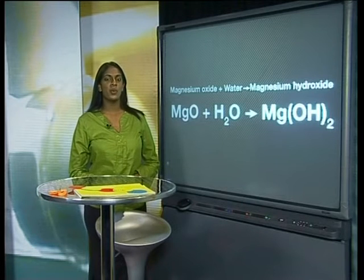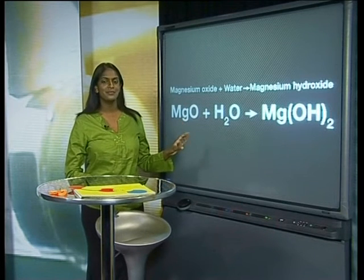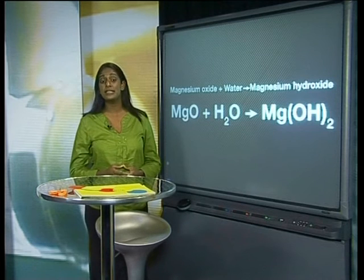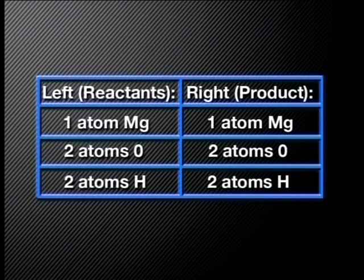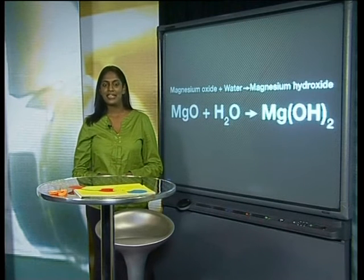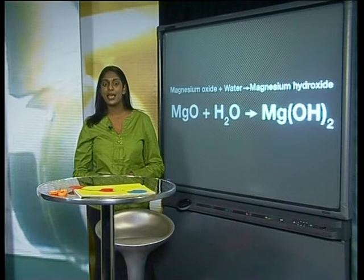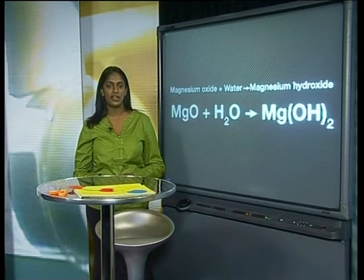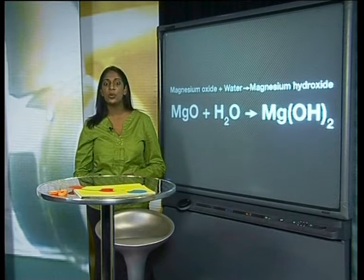Let's check whether this equation is balanced. You may want to draw up a simple table. Elements on the left: one atom magnesium, two atoms oxygen, two atoms hydrogen. Elements on the right: one atom magnesium, two atoms oxygen, two atoms hydrogen. As you can see, the number of atoms of each element is the same for the reactants and for the products. This means that our equation is balanced.